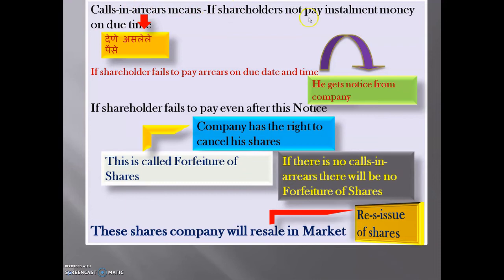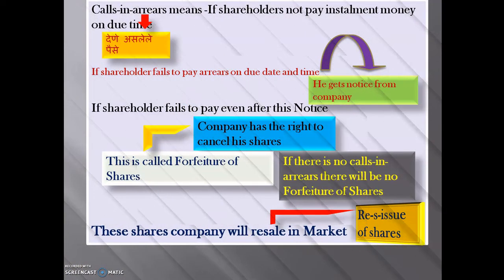If shareholders fail to pay the allotment or call money even after receiving the notice, the company has the right to cancel his shares — that is called forfeiture of shares. If there are no calls in arrears, there will be no forfeiture of shares. These cancelled shares the company will resell in the market, which is called reissue of shares.